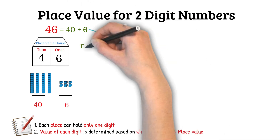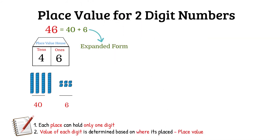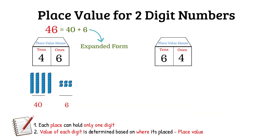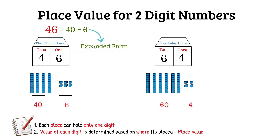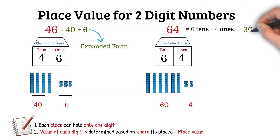This way of representing a number is called expanded form, where you expand in terms of tens and ones. Now let us take the same digits but in different places — the digit 6 in the tens place and 4 in the ones place. That means we have 6 tens and 4 ones: 6 tens equals 60, 4 ones is 4, so 64 equals 60 plus 4.